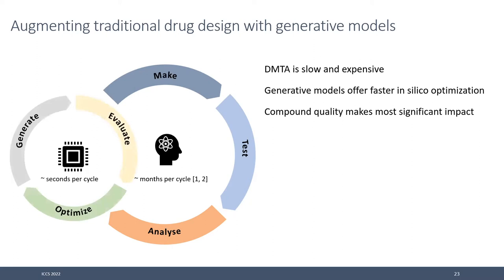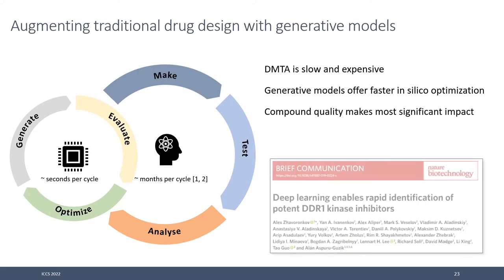With generative modeling, you want to augment the design stage in silico. A generative model iterates evaluation of molecules in silico and you can optimize it — that's seconds per cycle. But remembering Andreas's presentation about where we save the most money during drug discovery, it was actually compound quality that makes the biggest difference, so it's the quality of molecules that really matters.